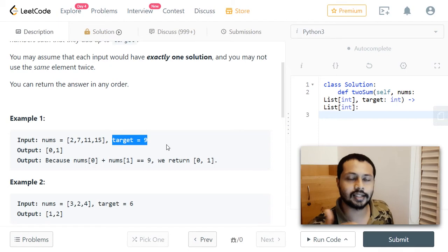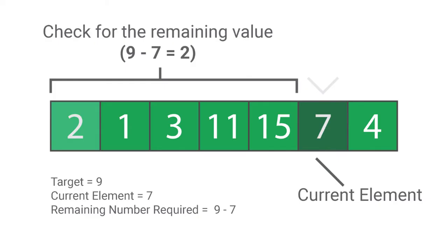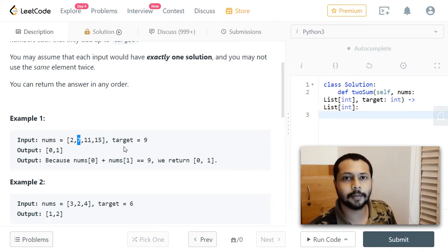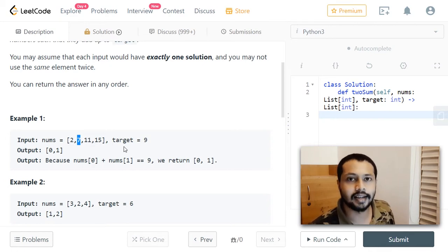For example, at some index we find the number 7 and the target is 9. So we compute 9 minus 7, which gives 2. We then check whether that element already exists in the input array. If it does, we know those two numbers sum to 9, and we can return the indices of these two elements — the question asks us to return indices, not the elements themselves.